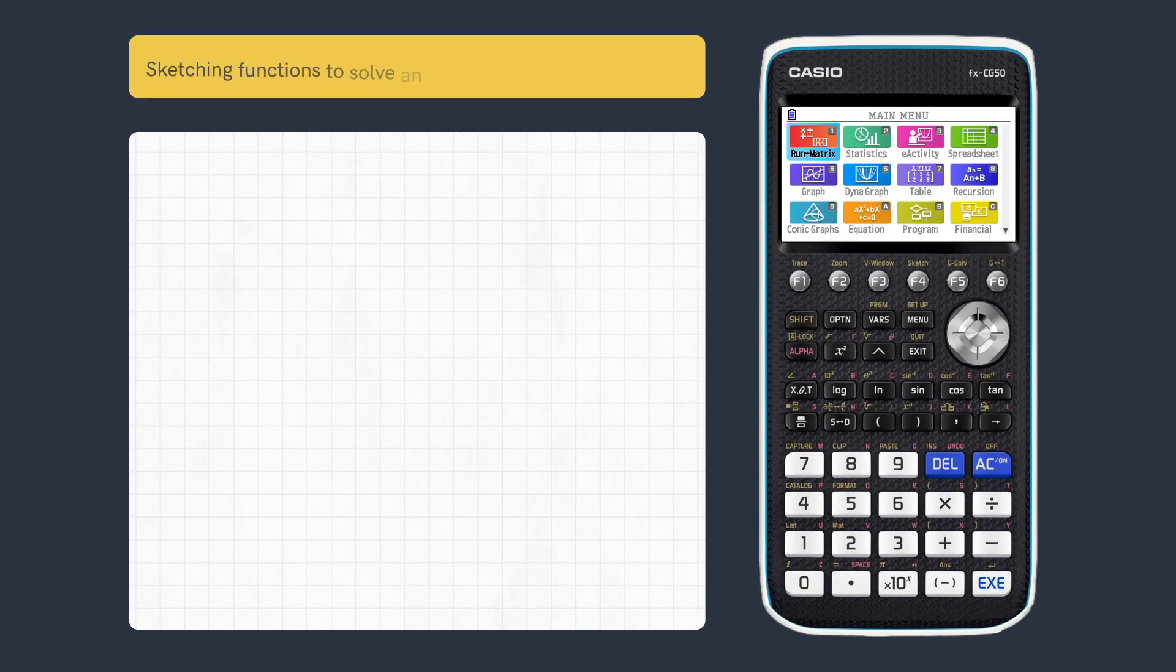This video looks at how to limit how much of a function is sketched. First, let's find the intersections of these two functions in graph.